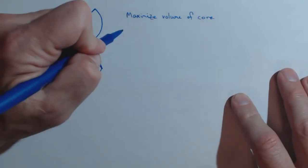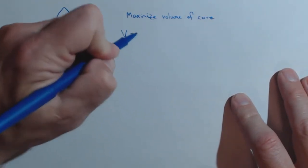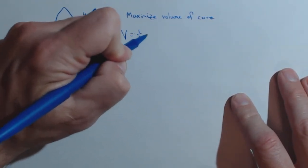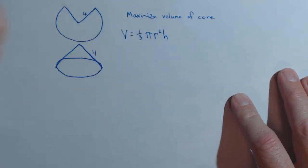Now if we want to maximize the volume of a cone, first thing we need is the formula for a volume of a cone, which is one-third pi r squared h.